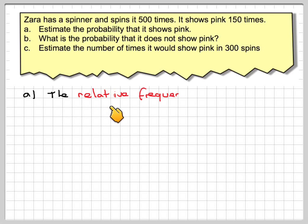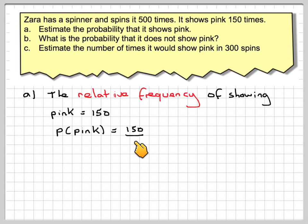So the relative frequency of showing pink is going to be equal to 150. So an estimate of the probability would be equal to 150 divided by the total number of spins, which is 500. So that's going to be cancelled down to, because 50 goes into 150 three times and into 500 ten times. So that would be 3 tenths.